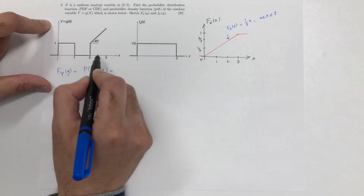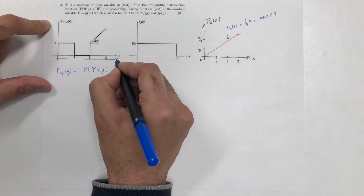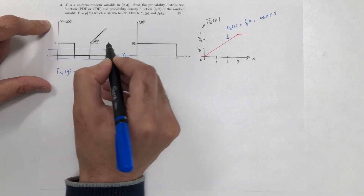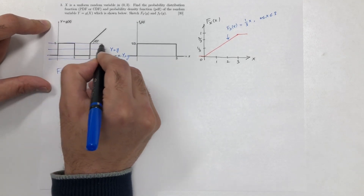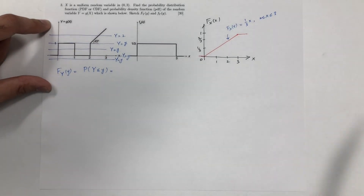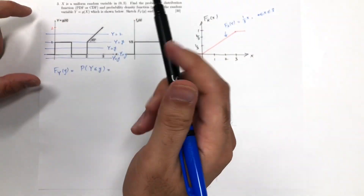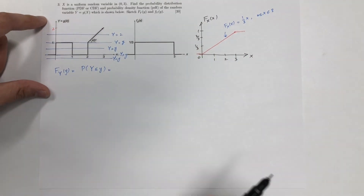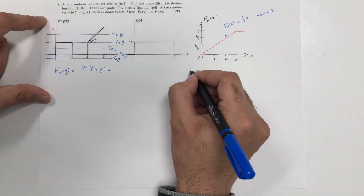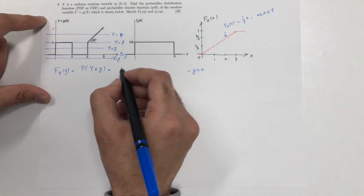Small y could range from below 0 all the way up. Let's start with the case where small y is below 0. If small y is below 0, then obviously the transformation cannot fall below this, so the distribution function is just 0.